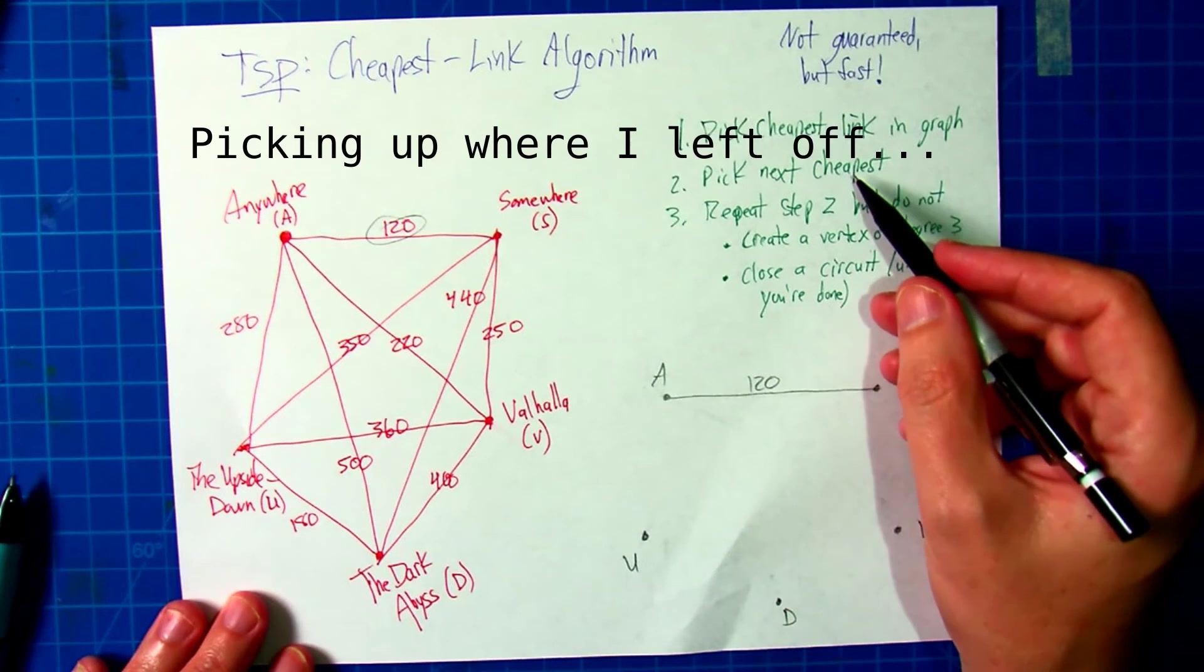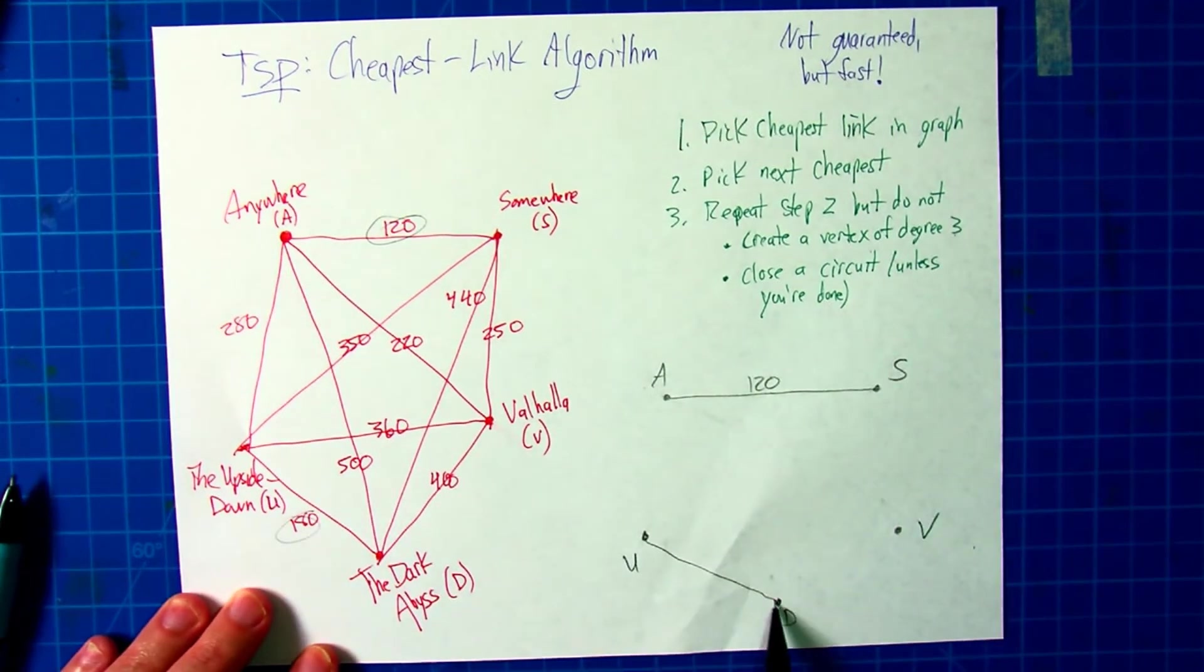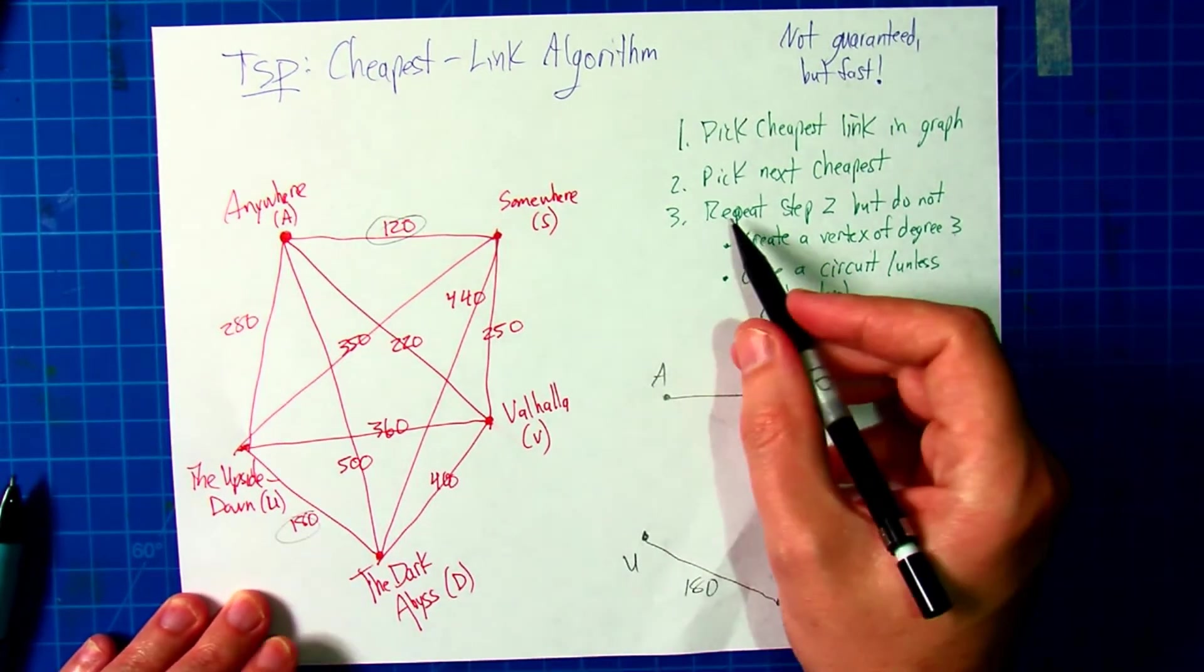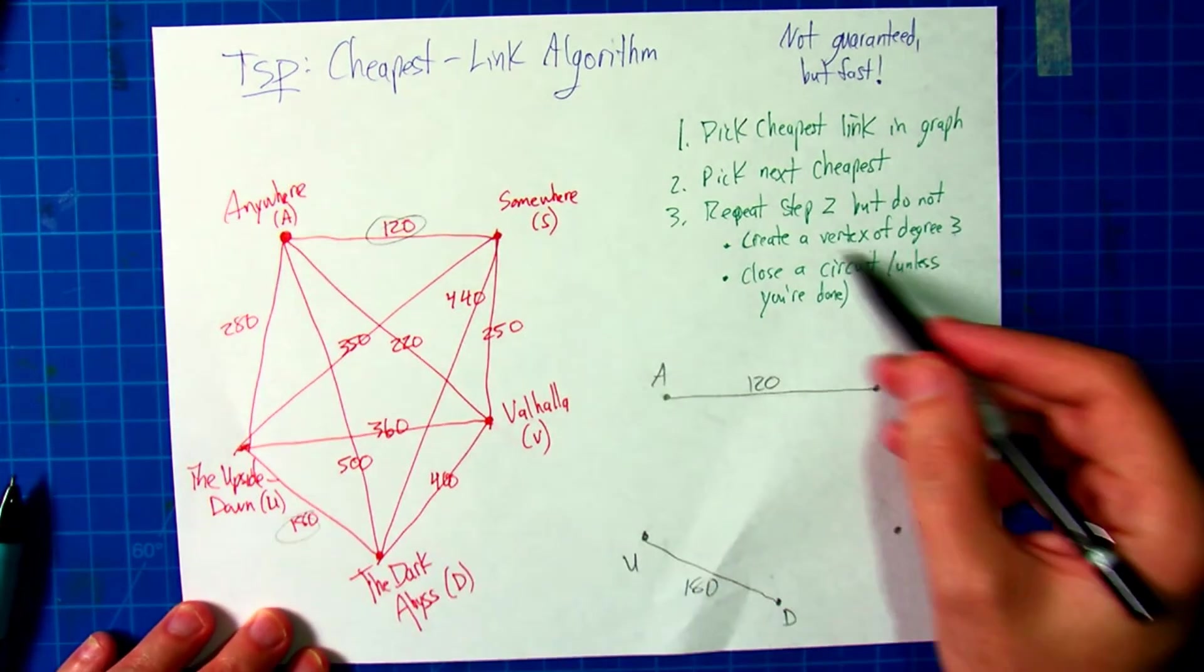Now, we'll pick the next cheapest, which is down here at 180, so we'll add that one in as well. Now, step three, we're just going to pick the next cheapest, keeping these two things in mind.